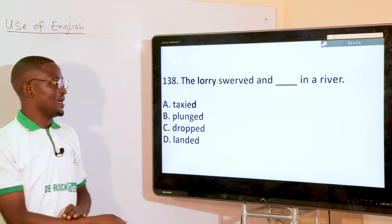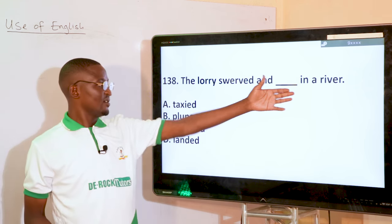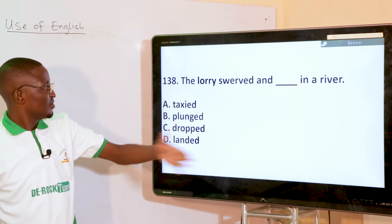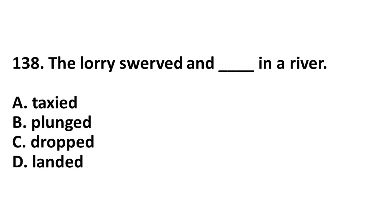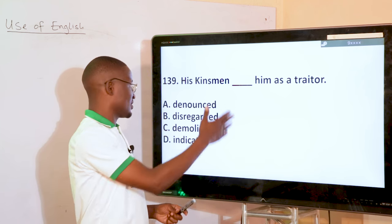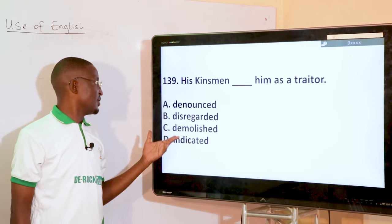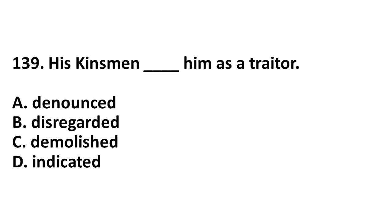The lord swerved and dashed in a river — since you have a river there, having swerved means 'plunged'; plunged in a river. His kinsmen dashed him as a traitor. What could they have done to him? Denounced, disregarded, demolished, or indicated? Of course, denounced — the kinsmen denounced him as a traitor.